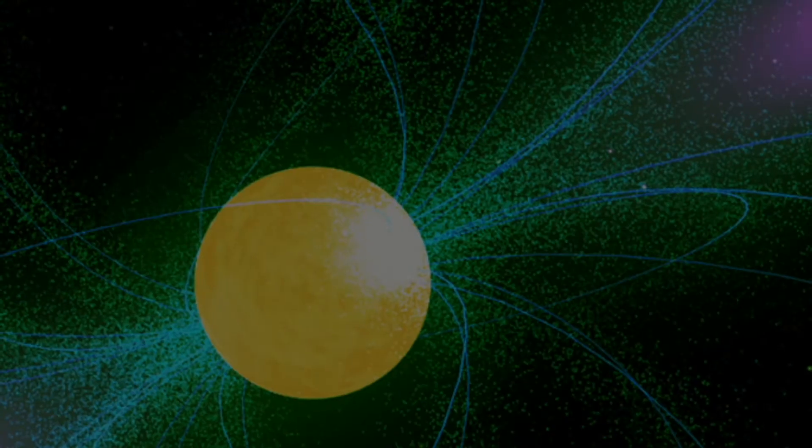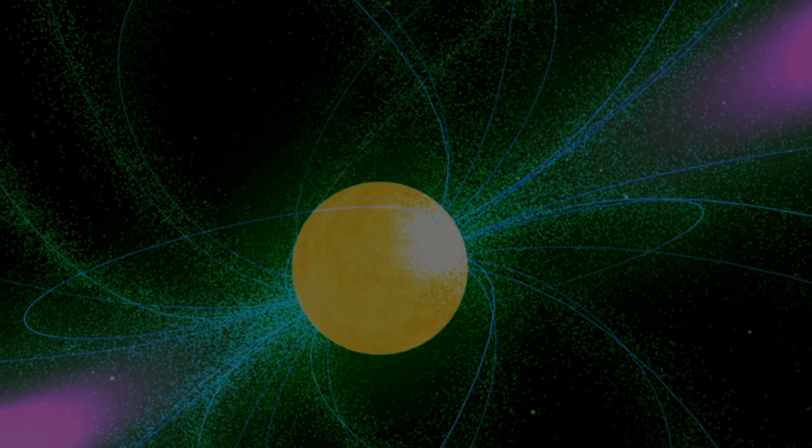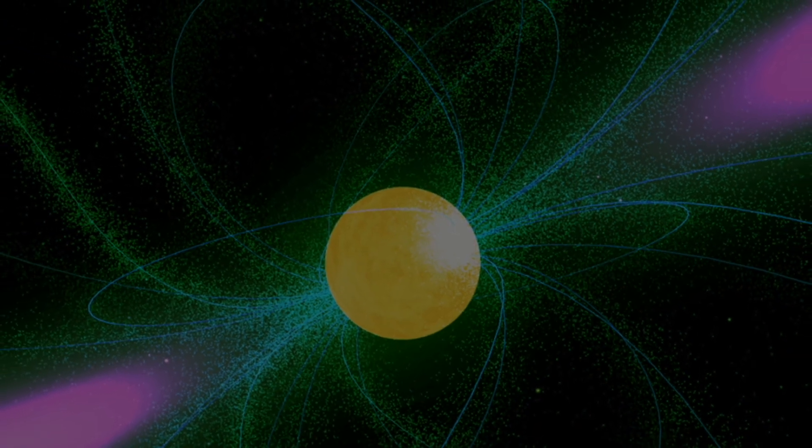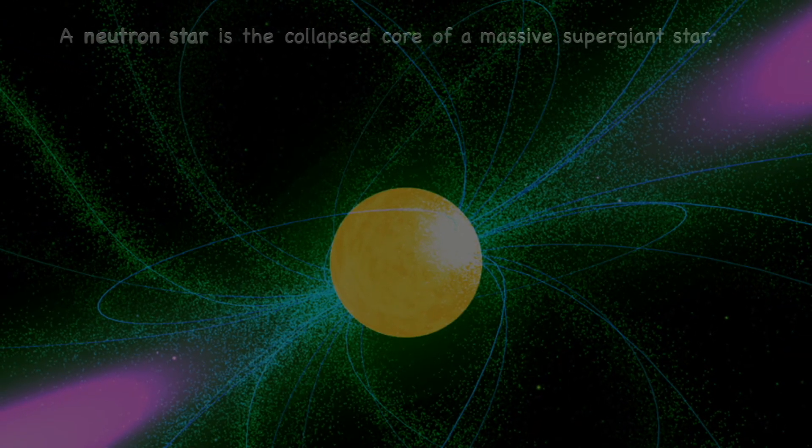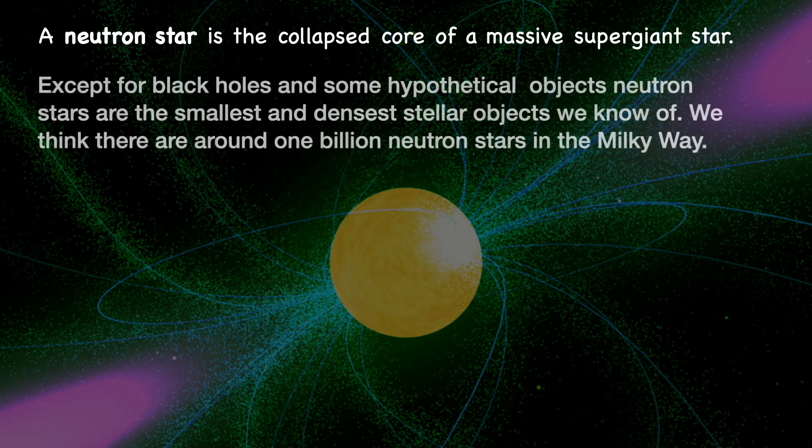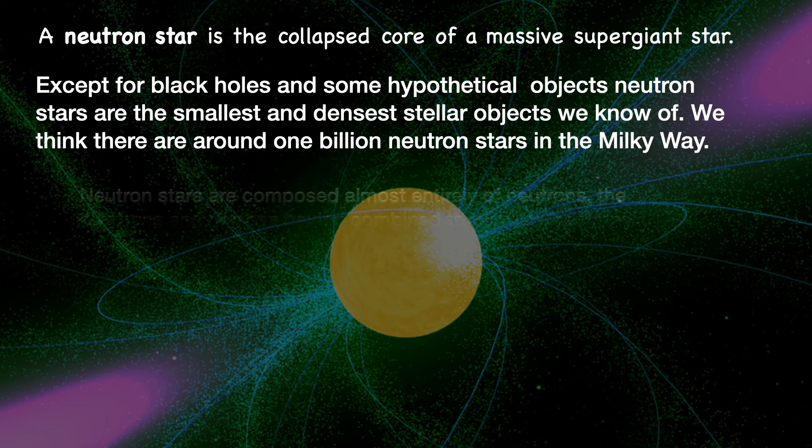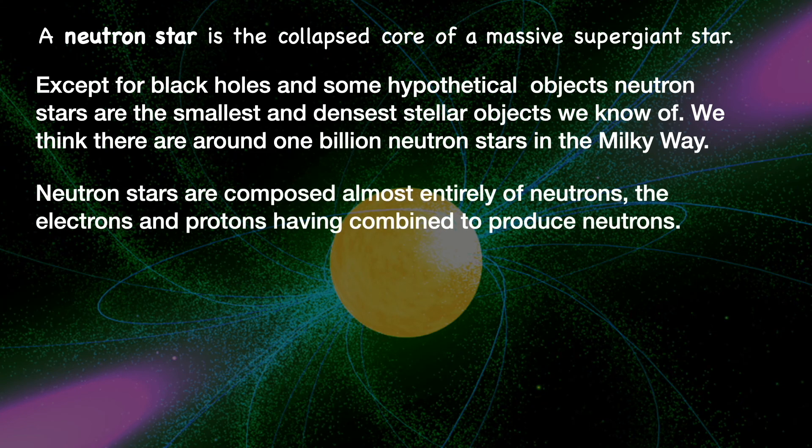A neutron star is the collapsed core of a supermassive giant. There are thought to be around a billion within the Milky Way, but they're hard to observe. Apart from black holes, they're the most dense bodies we know of. As a massive star collapses, the intense pressure pushes together the protons and electrons, so the whole thing becomes made of neutrons.